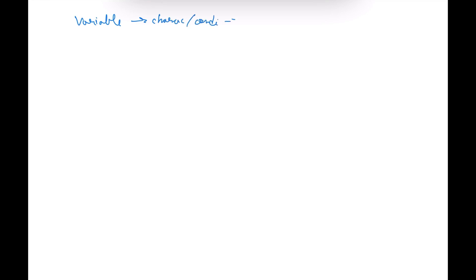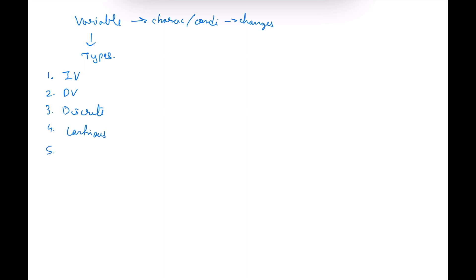Now we will talk about variables. Variables are any characteristics or conditions that change — they take different values for different individuals. The various types are: first, independent variable; second, dependent variable; third, discrete; fourth, continuous; fifth, moderating; sixth, mediating; and seventh, extraneous.